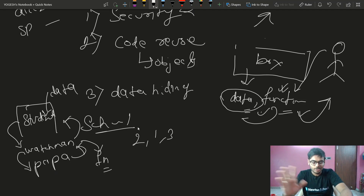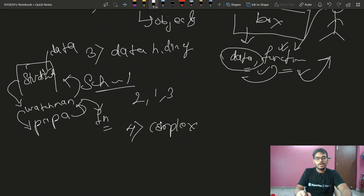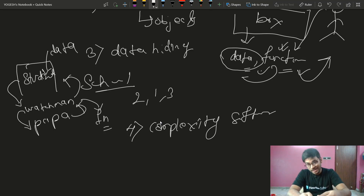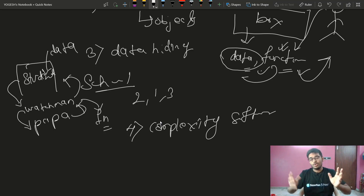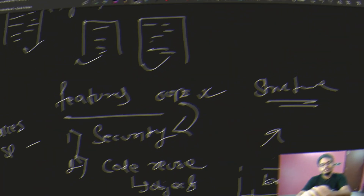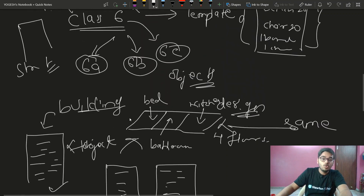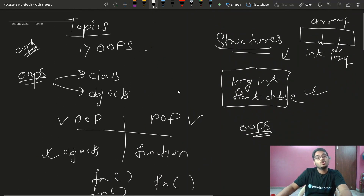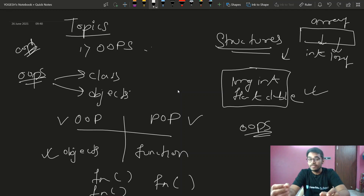Another point is complexity management — complex software has complexity that is managed via object-oriented programming. It helps manage large company software. These were the features of OOPs. I hope you now have basic knowledge of OOPs — why we need it and what concepts it involves. Class and objects are very good.